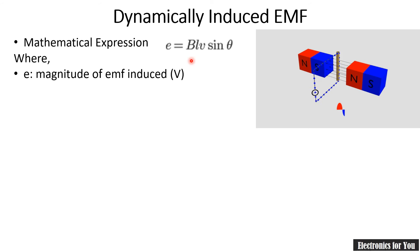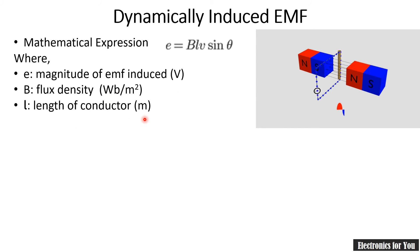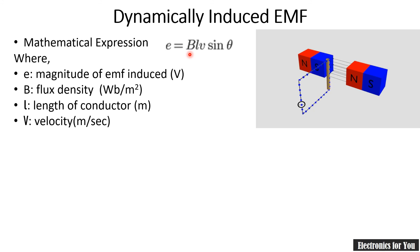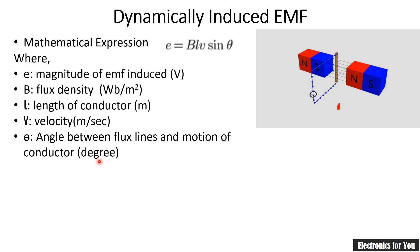The mathematical expression for this induced EMF is: e = BLv sinθ. Here, e is the magnitude of EMF induced measured in volts, B is the flux density in Weber per meter squared, L is the length of the conductor in meters, and v is the velocity in meters per second. More velocity means more EMF will be generated.